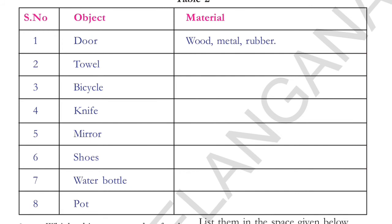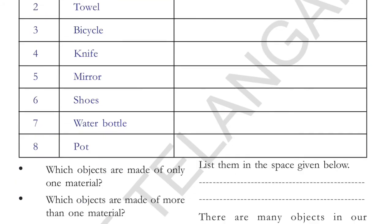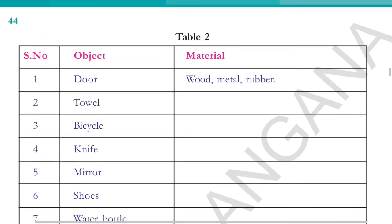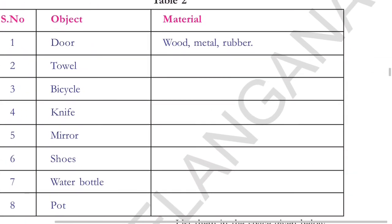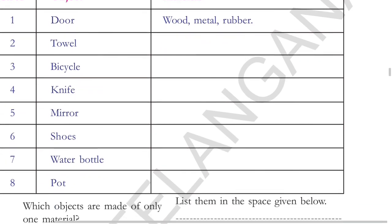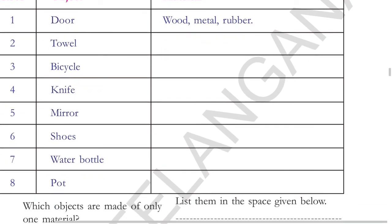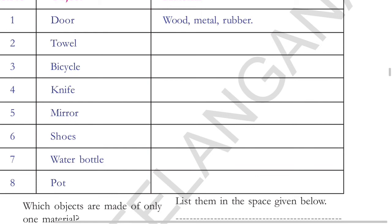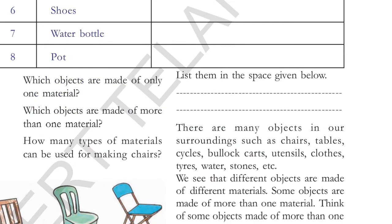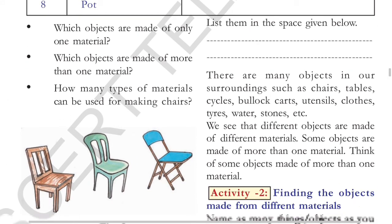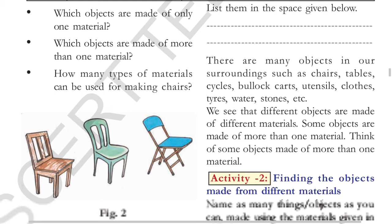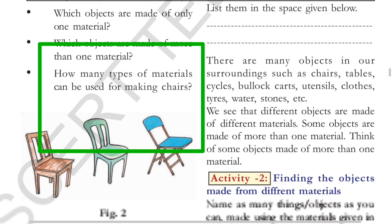Go on reading the names of the objects: door, towel, bicycle, knife, mirror, shoes, water bottle, and pot. You need to write the name of the material used to make these objects and fill the empty rows in the materials column. Which objects are made of only one material? Which objects are made of more than one material? How many types of materials can be used for making chairs?